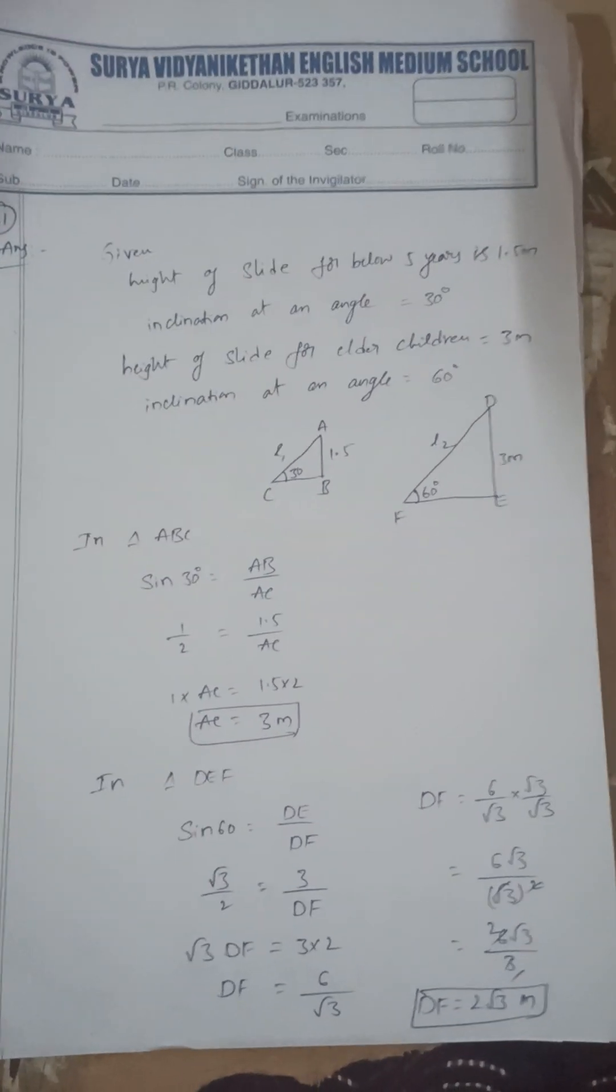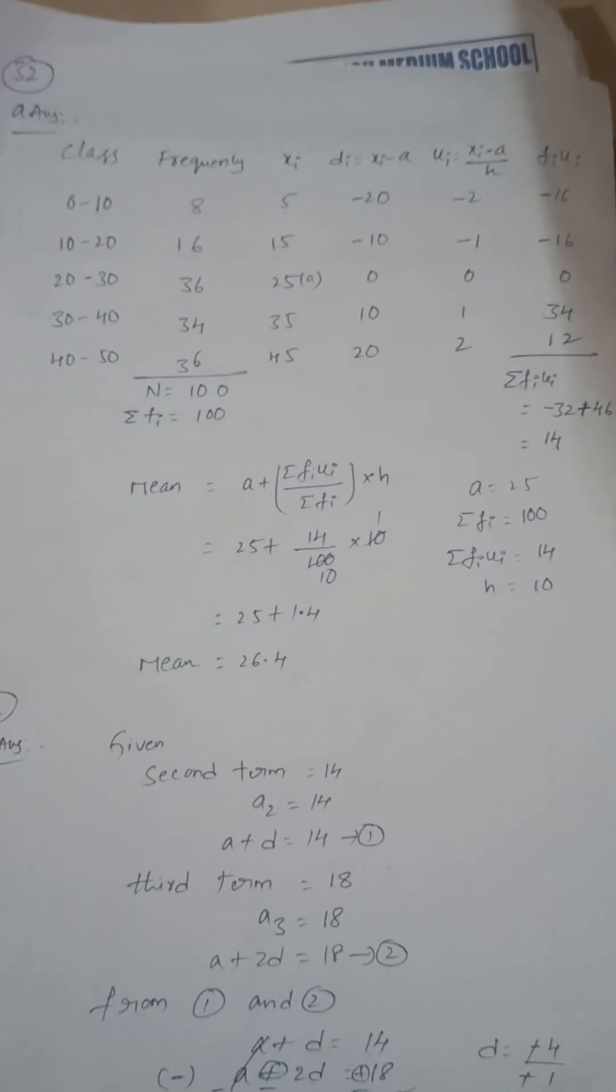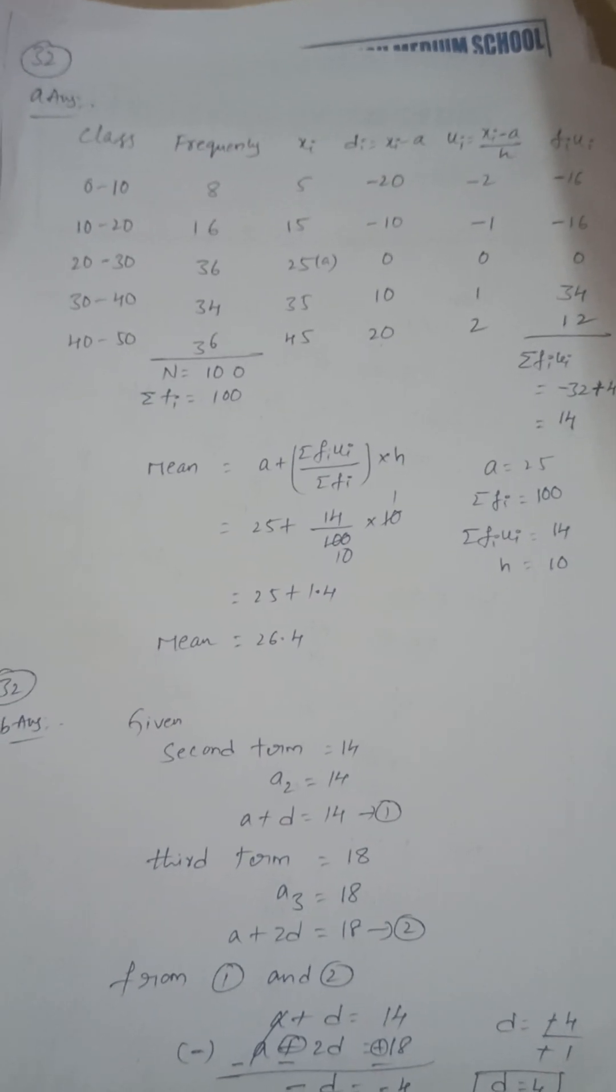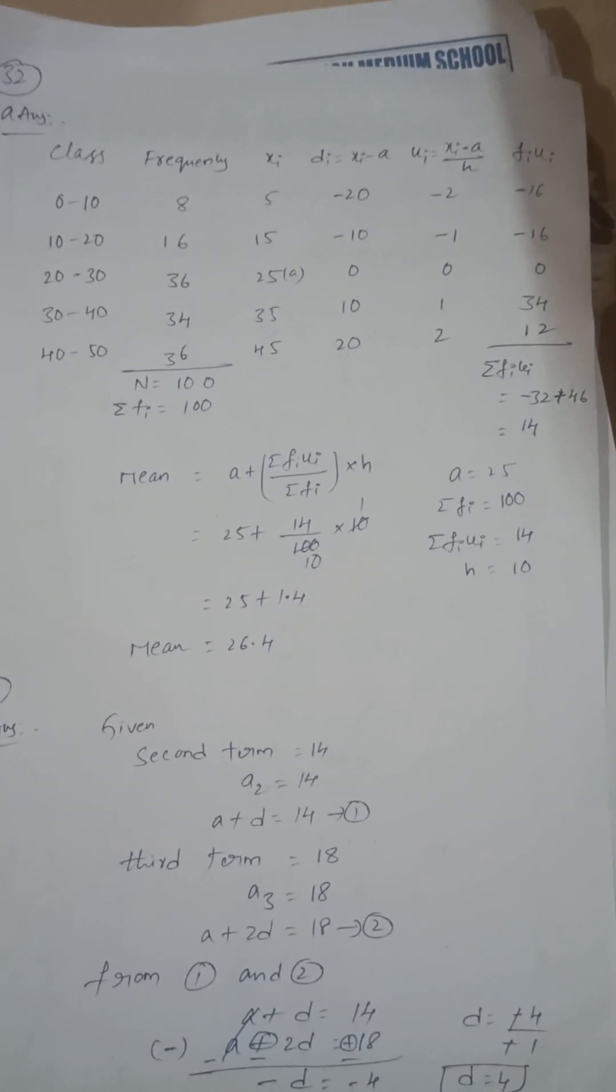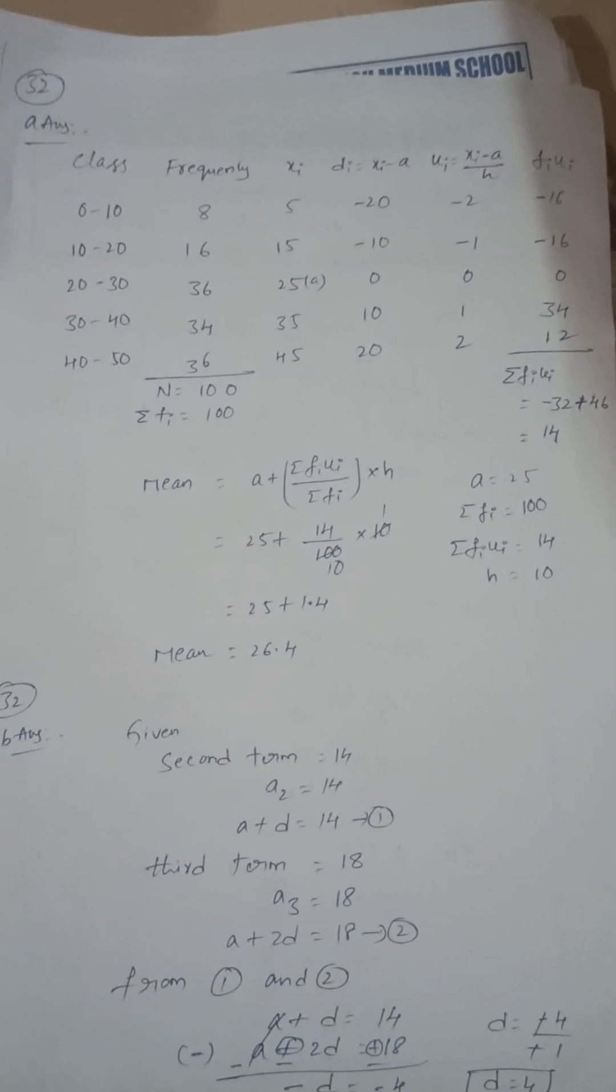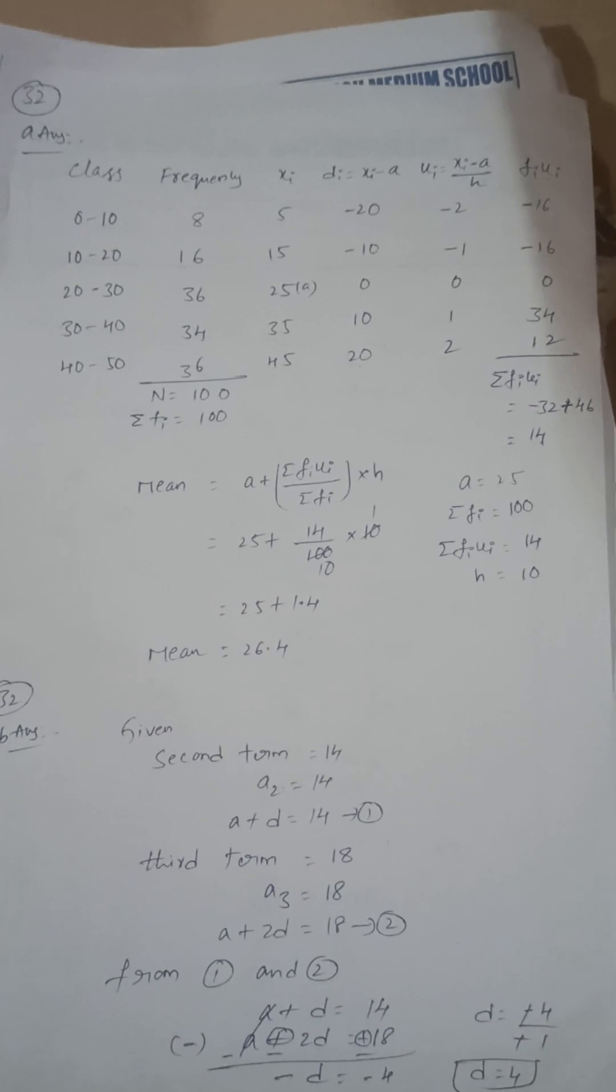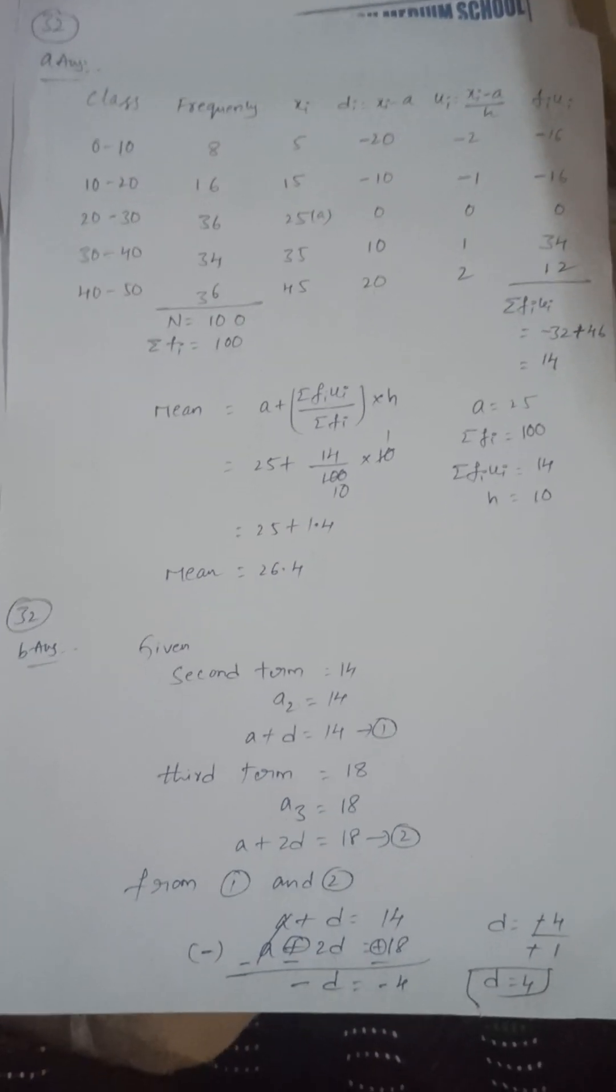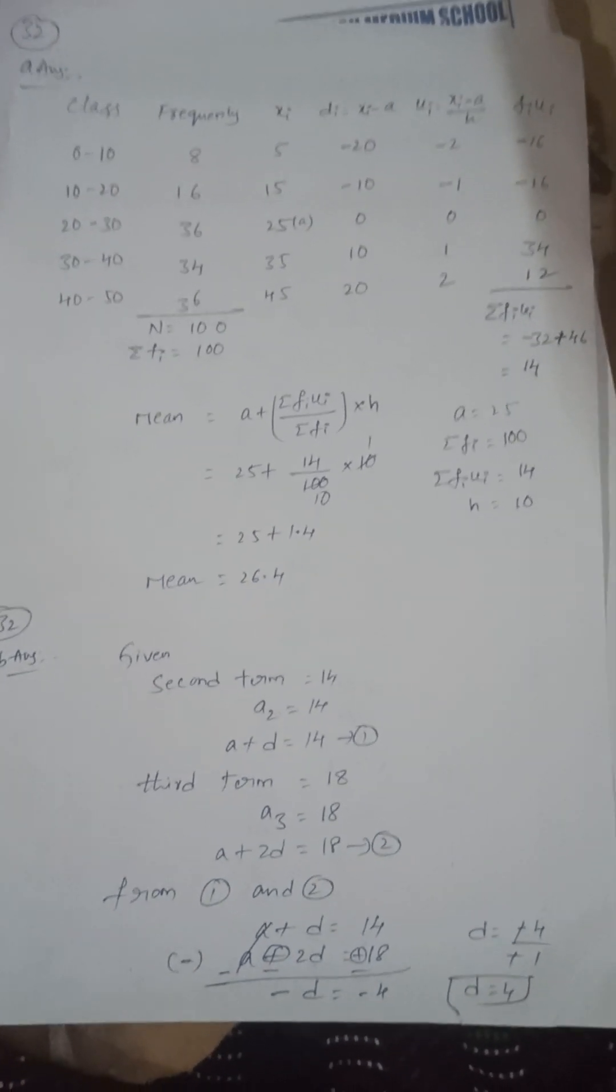Next, mean by using step deviation method. Formula is A plus sigma fi ui by sigma fi into h. So the mean is 26.4.